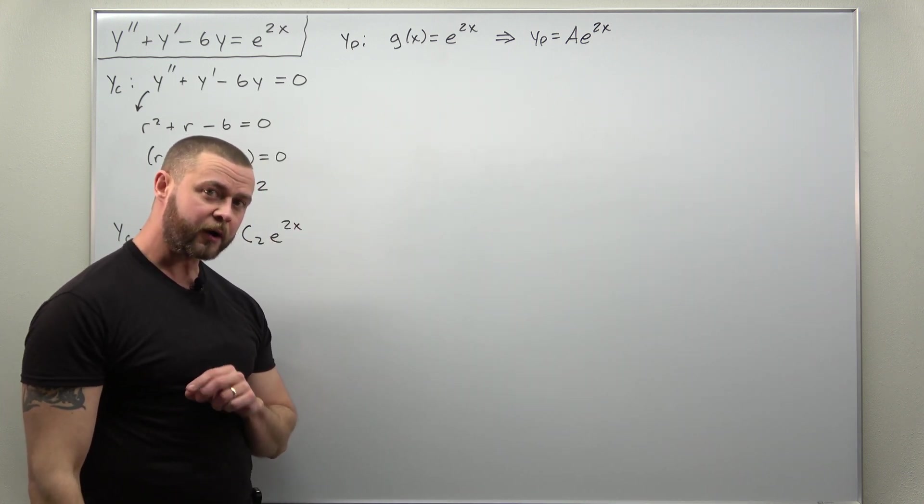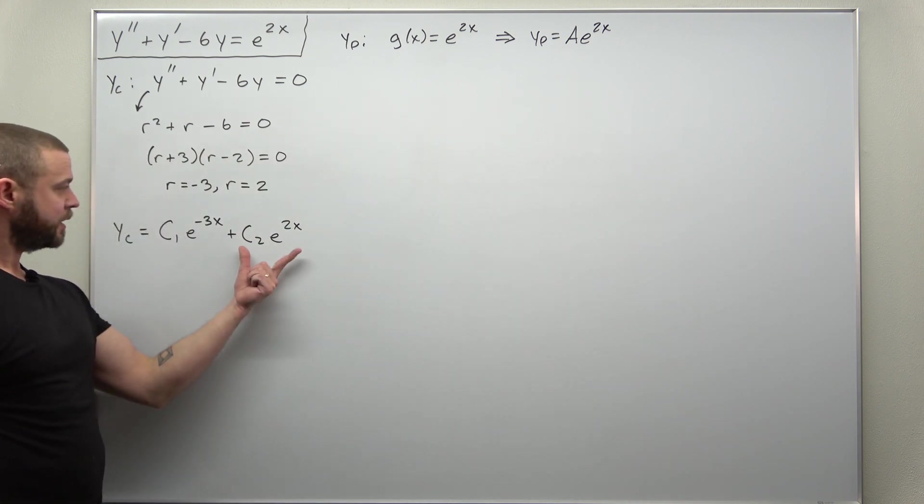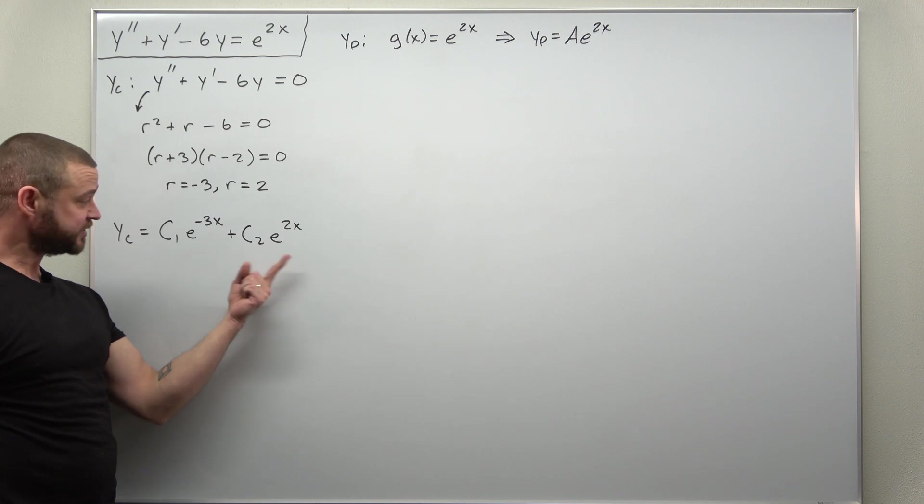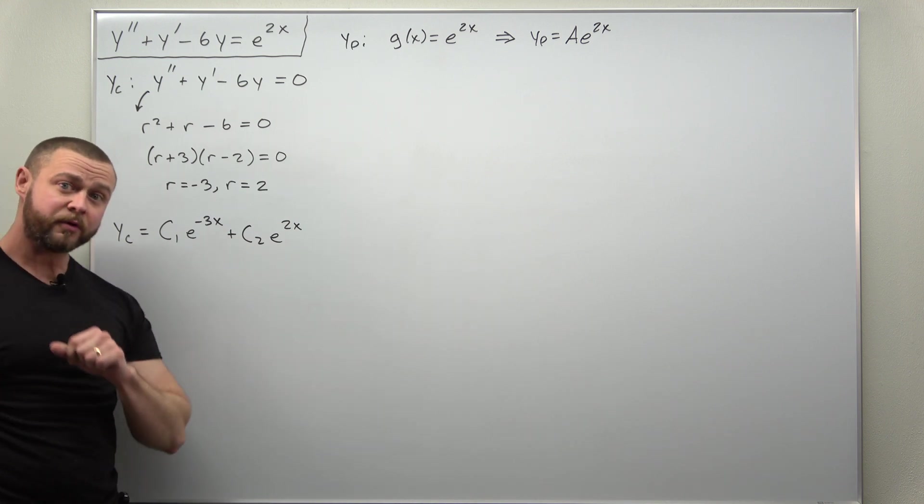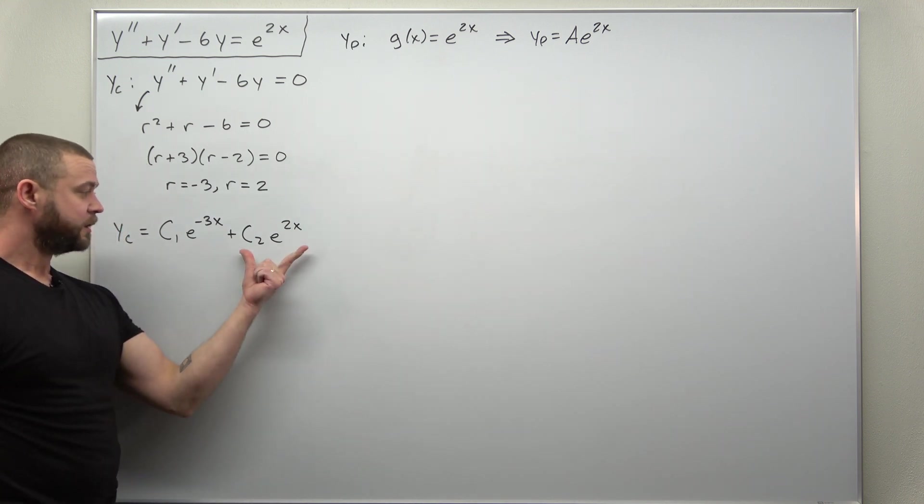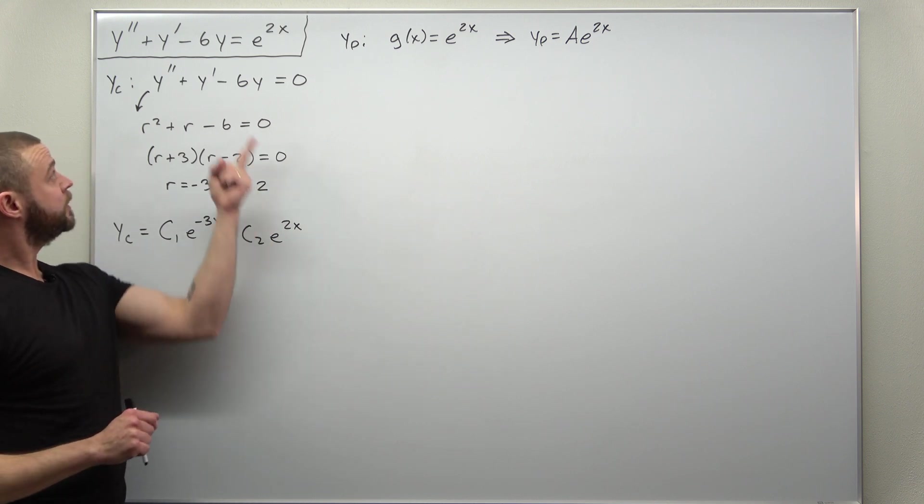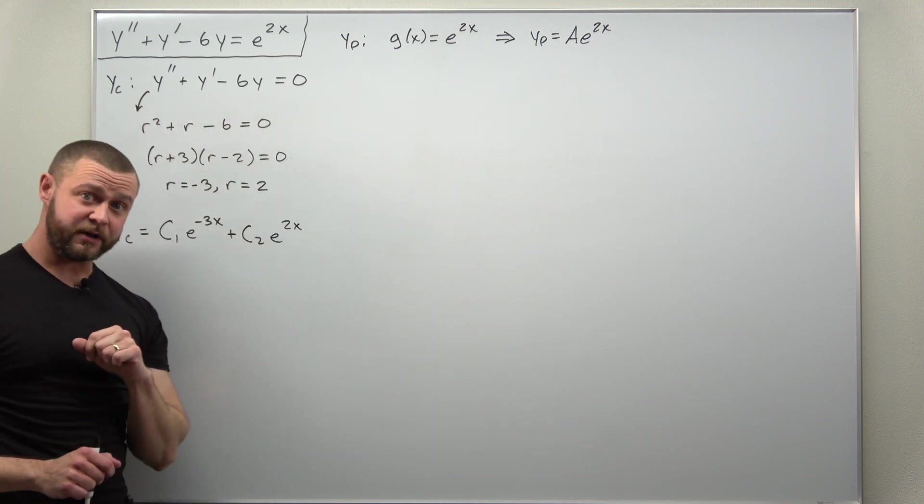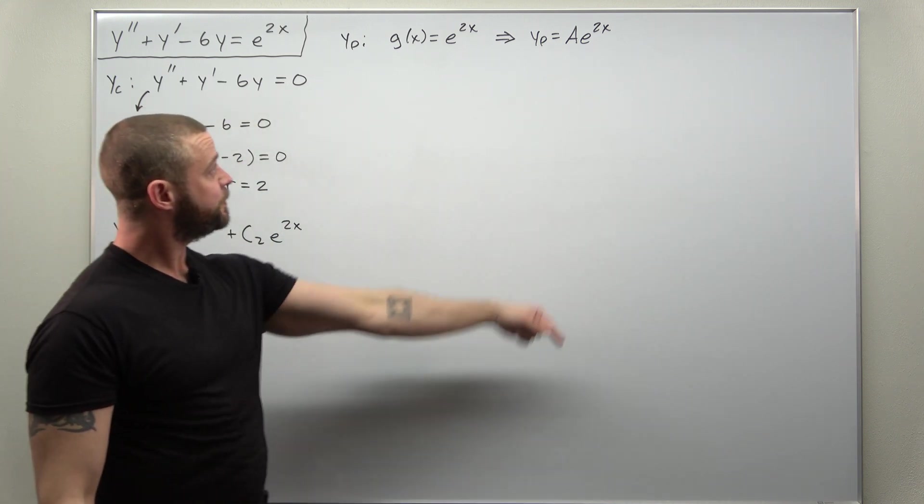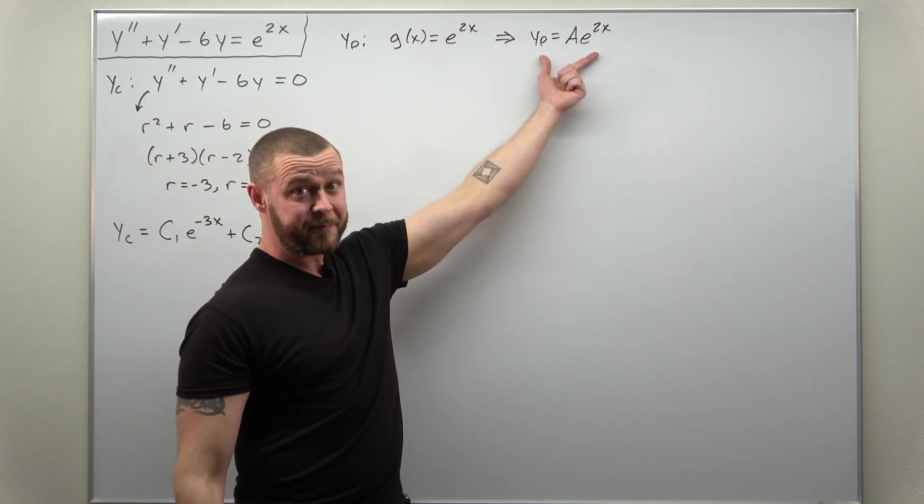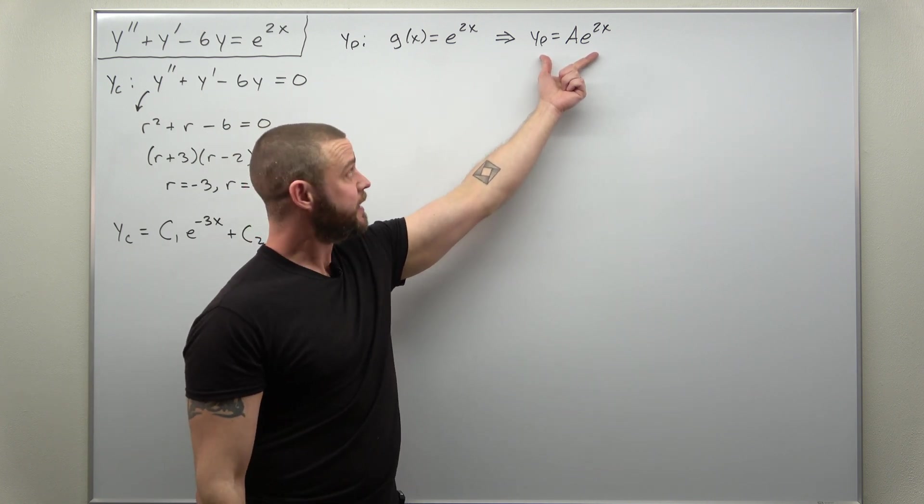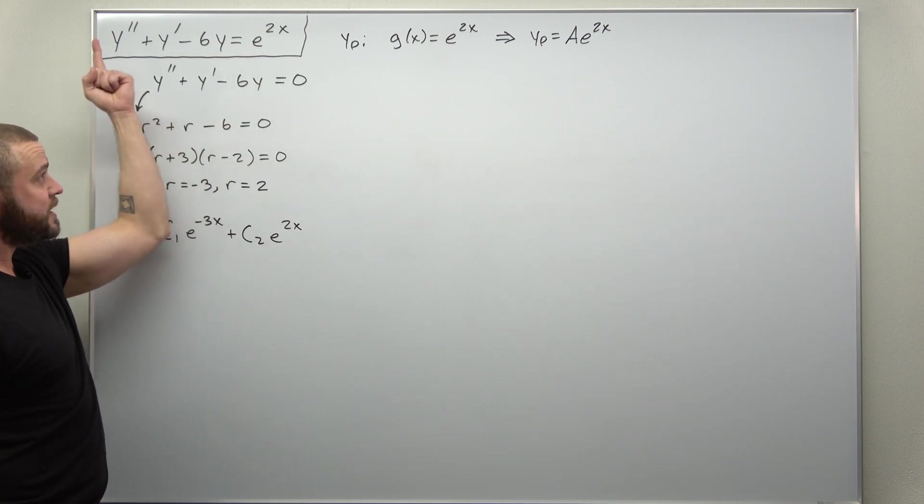Now we don't have to go through any work if you realize Ae^(2x) is the same thing as this, just with C₂ replaced with A. Now this is a solution to your homogeneous ODE, which means if you were to plug yₚ and its derivatives into the non-homogeneous ODE,